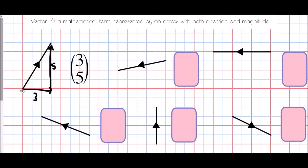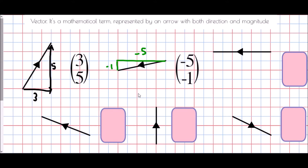The first value tells me the movement in the x direction and the second value shows the movement in the y direction. We must always begin at the start of the arrow and end at the tip. For our second arrow, the start is here, and moving in the x direction first: that's one, two, three, four, five — but negative five because we've gone left — then down one, which is also negative. So the column vector is negative five, negative one.